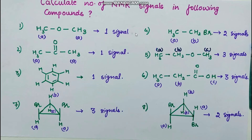Now some examples of calculating NMR signals. Pause the video, write down the questions, try to solve them, and then match with the answers. For a compound where three protons on each side are attached to the same carbon and both sets are equidistant from the same group, all six protons are equivalent — one signal. In another case where all three protons are attached to the same carbon and both CH₃ groups are equidistant from a C=O group, all protons are equivalent — one signal. Similarly, if all protons are identical and equivalent, we get one signal.